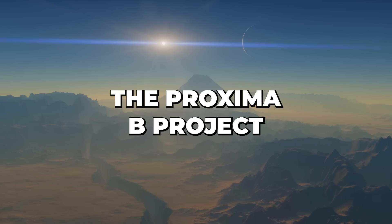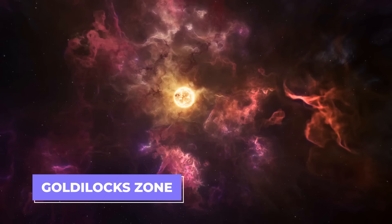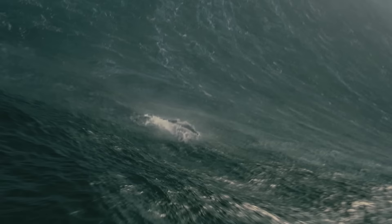The Proxima B Project. Proxima B is found to be in the area near its star that scientists call the Goldilocks Zone, which is also seen to be near our Sun. Proxima B is believed to have the right conditions for water to exist in it.